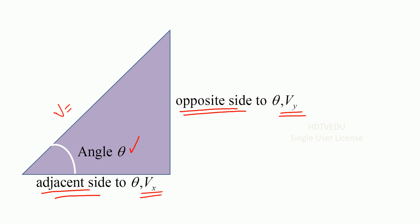So what is v? It will be square root of vx squared plus vy squared. So that's our hypotenuse. All right, so that is the magnitude.